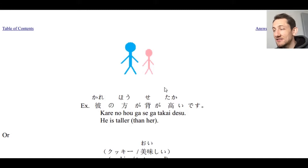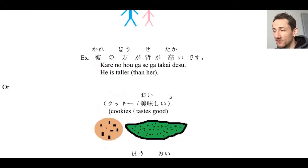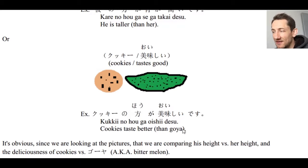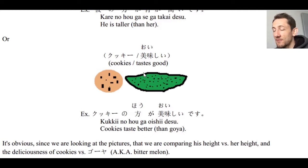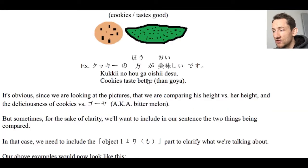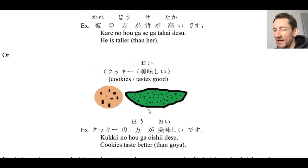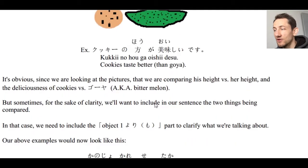We can say he is taller without specifying 'than her.' Or for example, kukki no hoga oishii desu — cookies taste better, cookies are more delicious than goya. We don't actually need the 'than goya' part, but we can include it if we want. That's how Japanese works, exactly the same way as English. It's obvious in this picture we're talking about his height versus her height, or the deliciousness of cookies versus this vegetable.